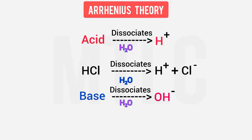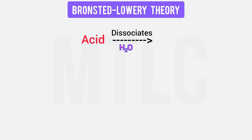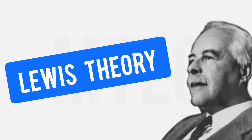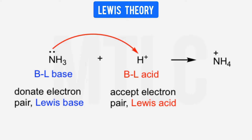In Bronsted-Lowry theory, acids are proton donors and bases are proton acceptors — this is the proton concept. In Lewis theory, acids accept the lone pair of electrons, so they are electron acceptors, while bases donate the lone pair of electrons, so they are called electron donors. This covers the acid-base concept.